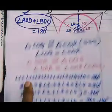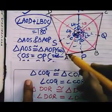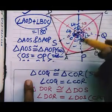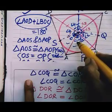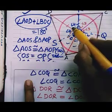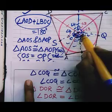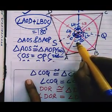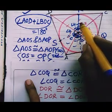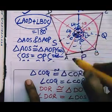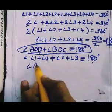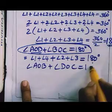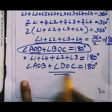In the same way, the other pair of opposite sides also gives supplementary angles at the centre. From the figure, angle AOB plus angle DOC also equals angle1 plus angle2 plus angle3 plus angle4 equals 180 degrees. Hence proved.